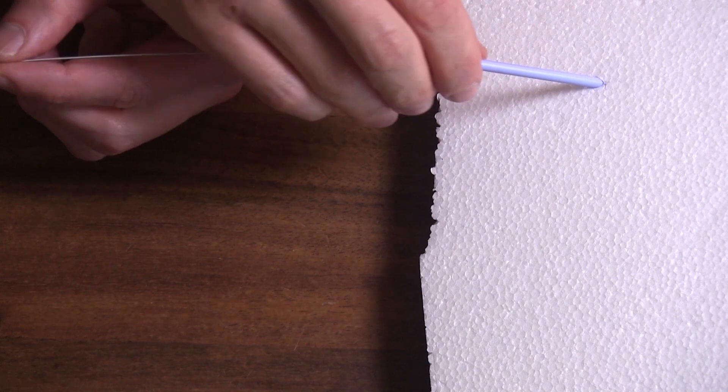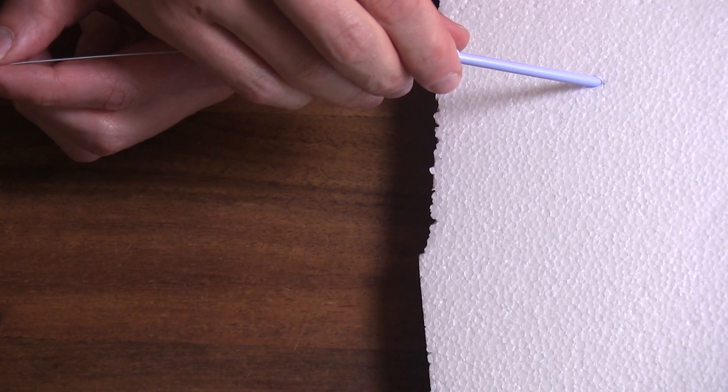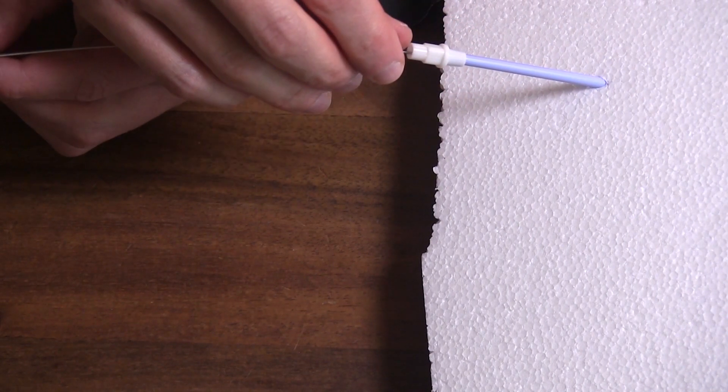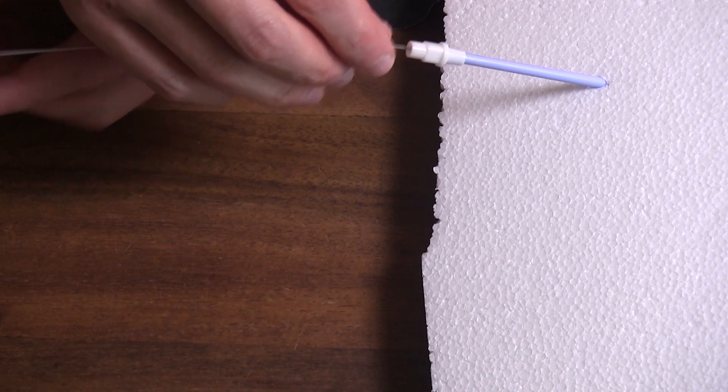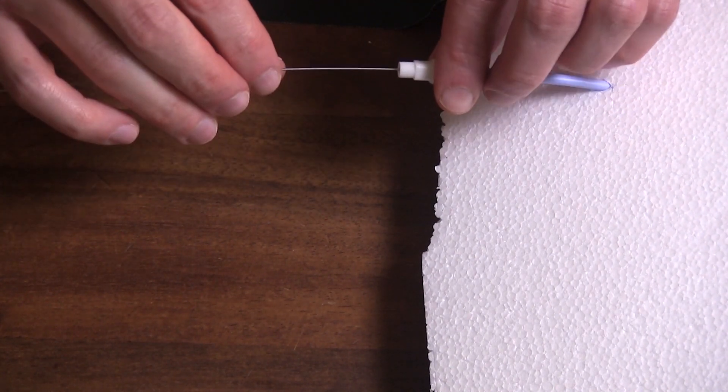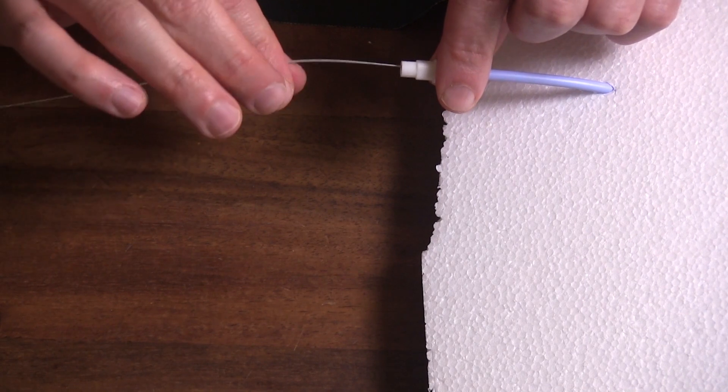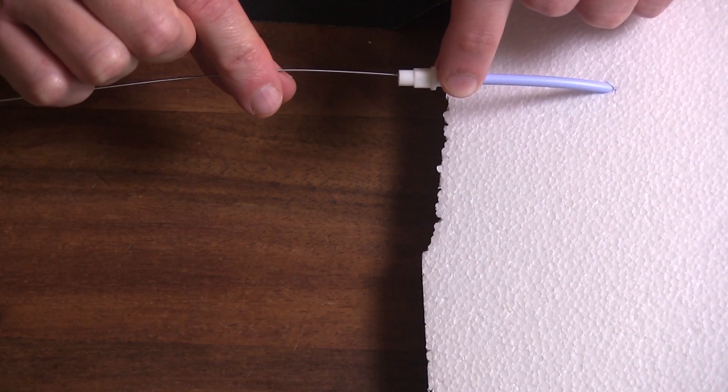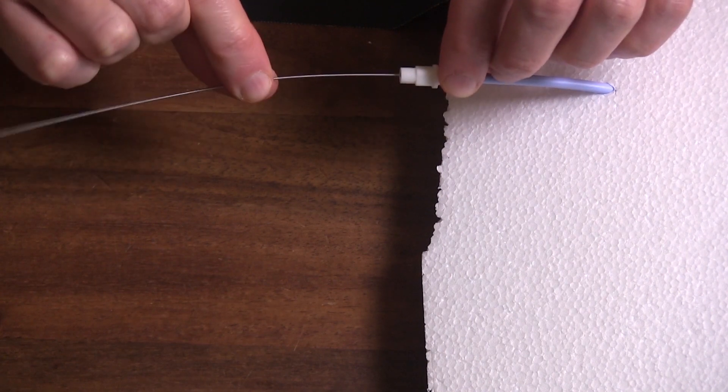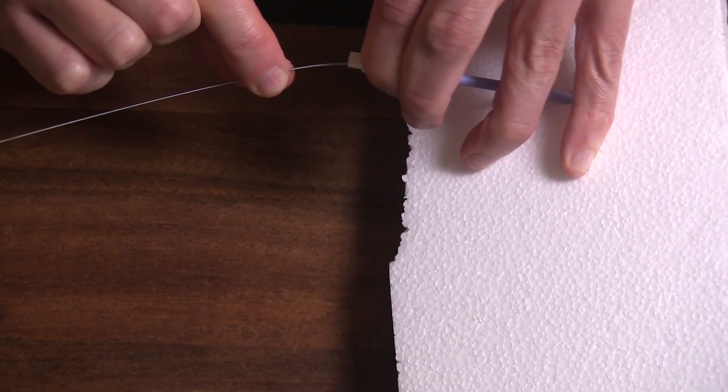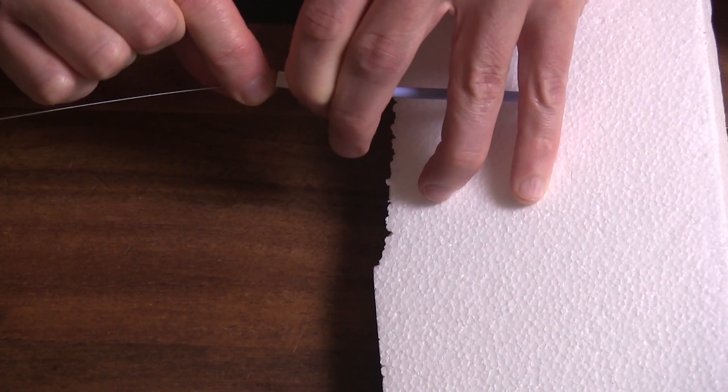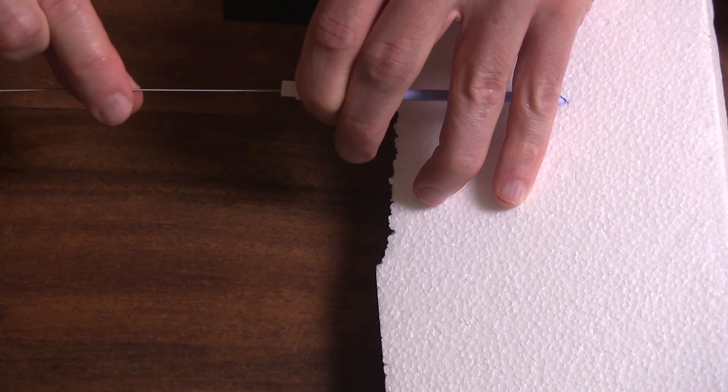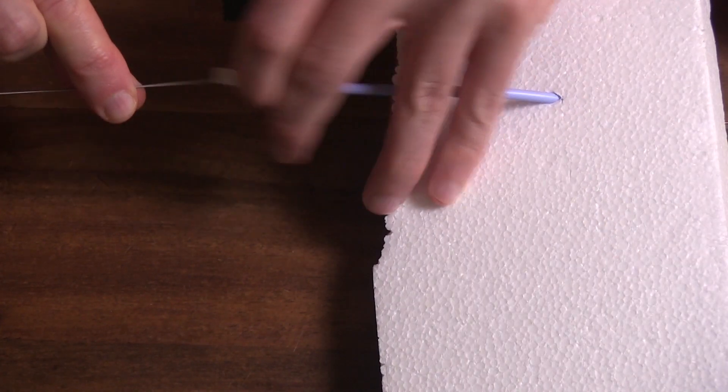Now the next technique is called pinch and pull. And this is how to take a large dilator out off a wire. And pinch and pull involves pinching the wire maybe, I don't know, four or five centimeters away from the back of the dilator. You pinch and then you pull towards your fingers.